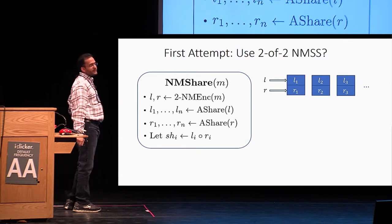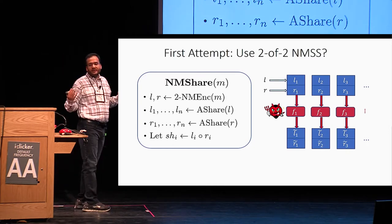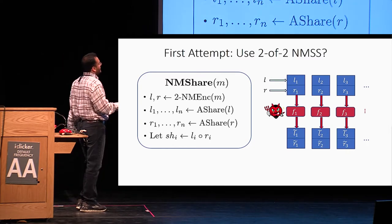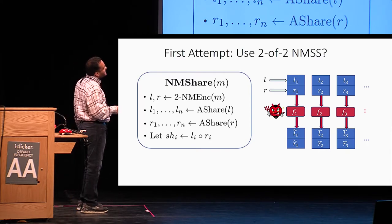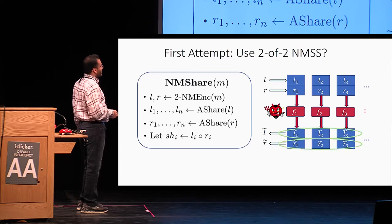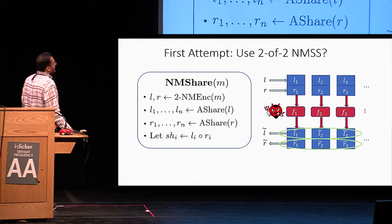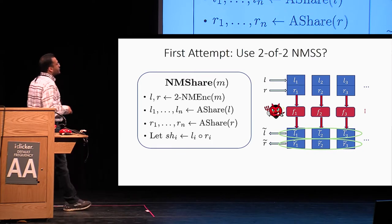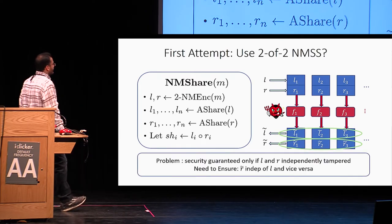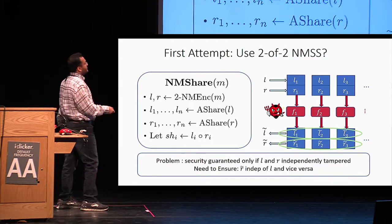We are in the individual tampering setting, so the adversary tampers with all these shares individually and we get L1-tilde, R1-tilde, and so on. You can reconstruct L-tilde and R-tilde to get the tampered message. Our idea is to prove security by relying on two-out-of-two non-malleable secret sharing. But the security of two-out-of-two NMSS is guaranteed only if L and R are independently tampered.